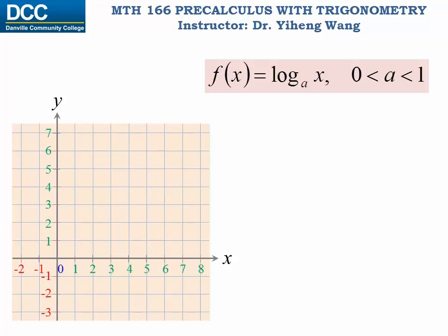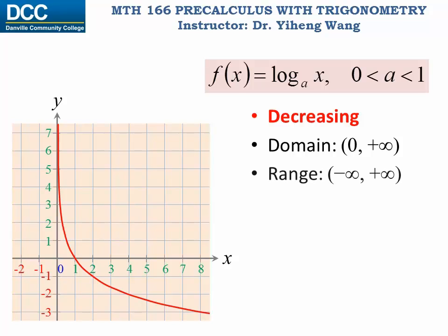Now for the graph of the logarithmic function with base value a between zero and one, if you compare its graph to the graph on the previous slide, the only difference is that this graph is continuously decreasing. Other than that, all the major properties are the same. They have the same domain, x must be bigger than zero. Same range, the function value can be any real number.